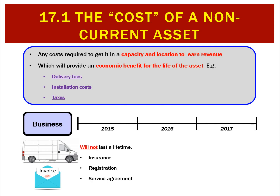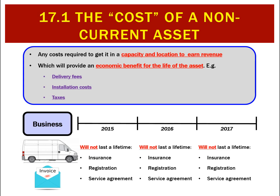Things that aren't going to last a lifetime — say insurance, registration, or a service agreement — we're going to have to pay those every year, in 2015, 2016, 2017, and so on. They're not going to provide an economic benefit for the life of the asset since we pay them each year, so they're not going to be part of the asset's cost and we don't include those.